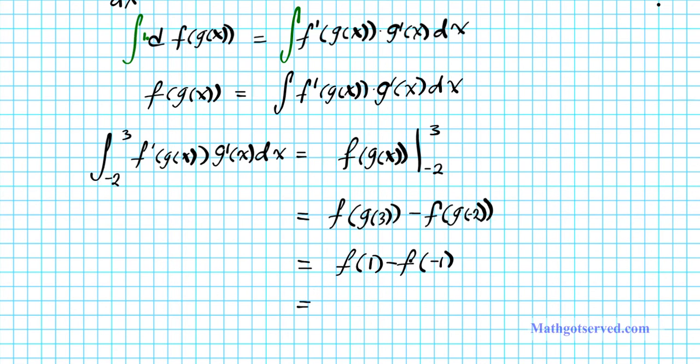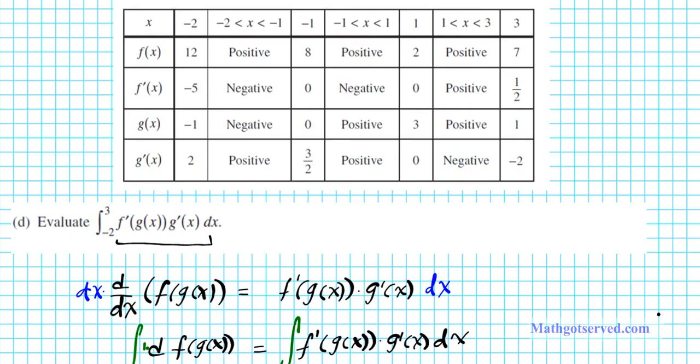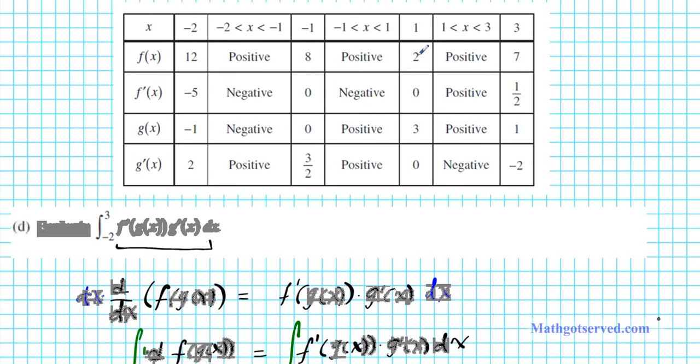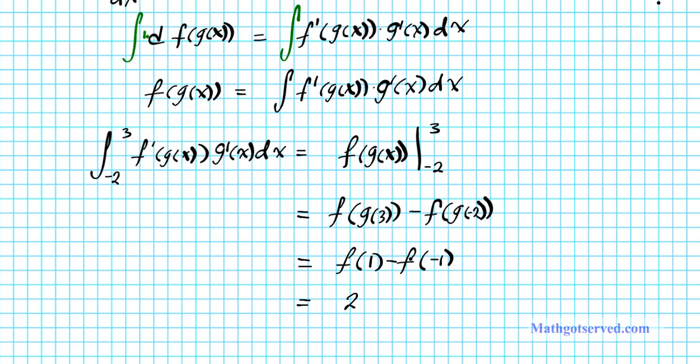Now we're going to switch to the f column. We're going to find f of 1 and f of negative 1. f of 1 is 2, f of negative 1 is 8, so we're going to put that back in. f of 1 is 2 minus f of negative 1 which is 8, 2 minus 8 is negative 6 and that's the value of the definite integral of f prime of g of x times g prime of x from negative 2 to 3.